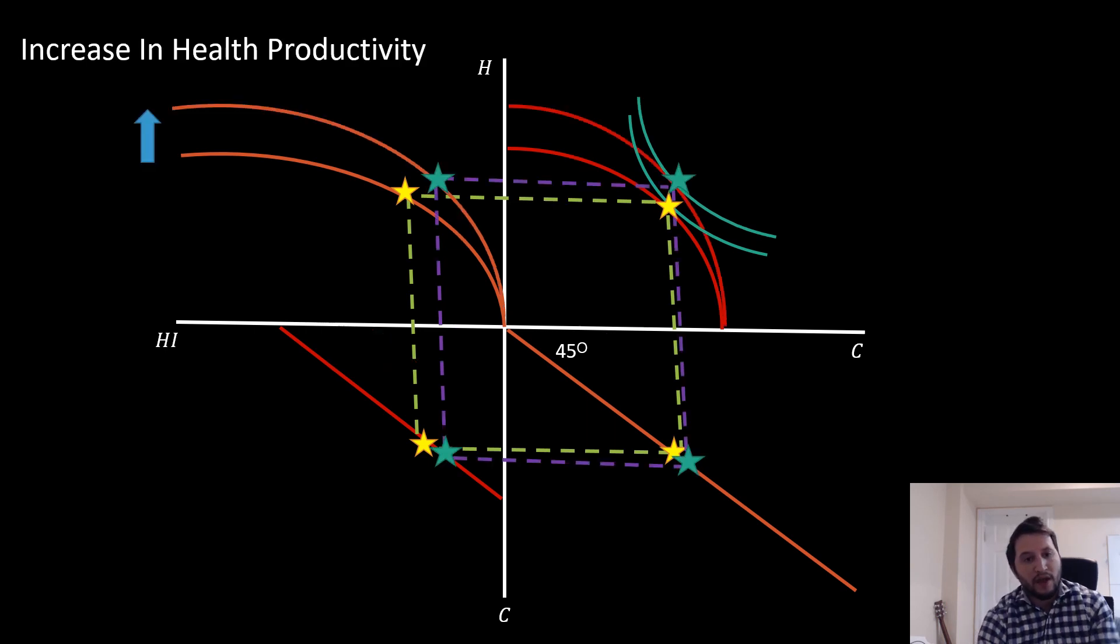If we think about an increase in health productivity, just a shift upwards in our production function, we see some remarkable results: less income being spent on health input but yet a higher level of health status being produced.